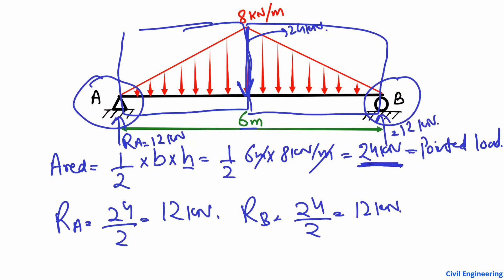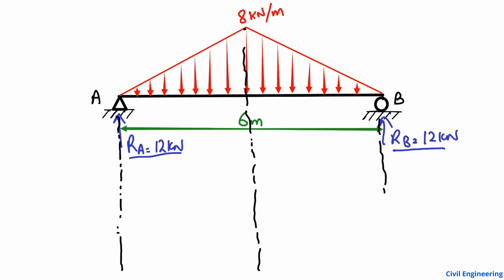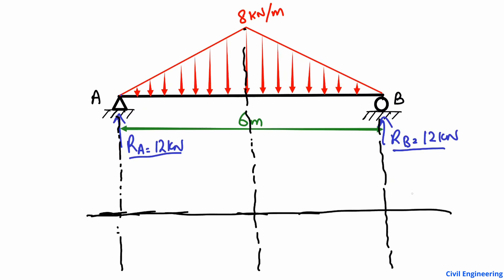Now let's draw the shear force diagram for this beam. Support A is 12 kilonewtons and support B is also 12 kilonewtons. We first draw a reference line — a zero reference line for the shear forces. Always take the important points in the beam into consideration; here the midpoint is also important. The shear force is in kilonewtons.